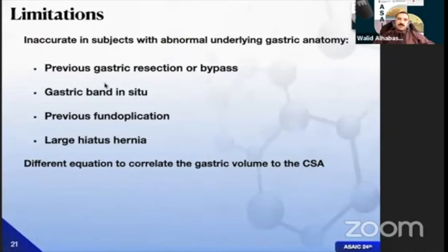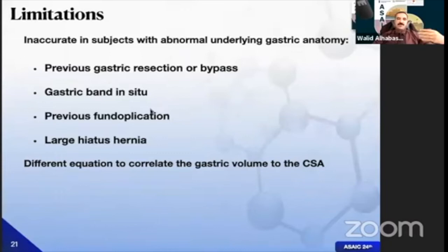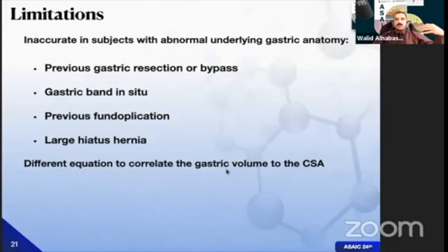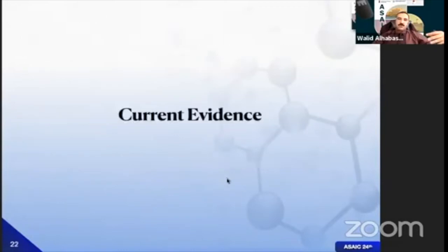Limitations of gastric ultrasound include inaccuracy in subjects with abnormal underlying gastric anatomy, such as gastric bands, gastric resection or bypass, or fundoplication in hiatus hernia. There are also multiple confusing equations for converting cross-sectional area to gastric volume, which is one of the ongoing challenges in this field.